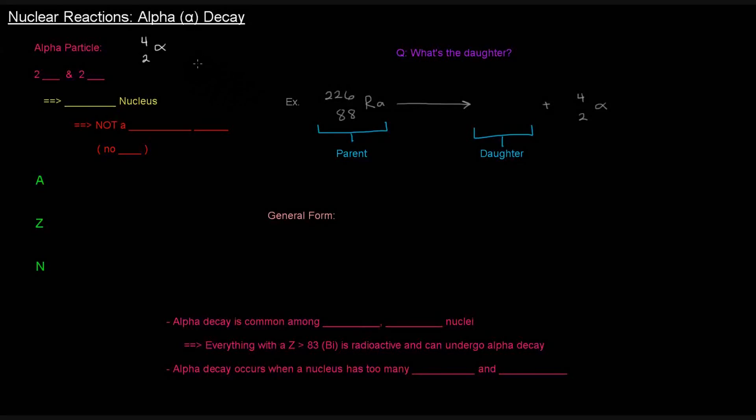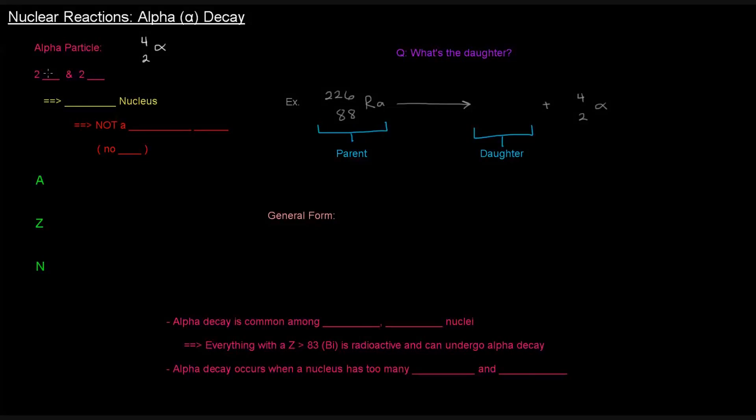First up is alpha decay. What is an alpha particle? An alpha particle basically is just two protons and two neutrons. We've actually seen it before in Rutherford's GoldFoil experiment. If you haven't seen that video, I'd encourage you to watch it. It describes how we discovered the atomic nucleus. It's just two protons and two neutrons.